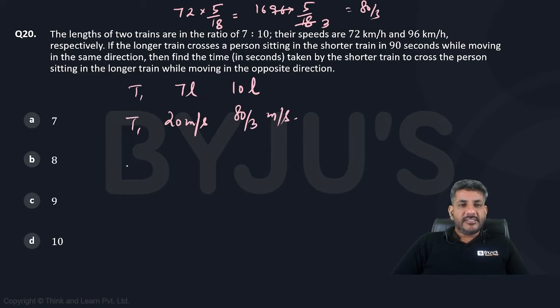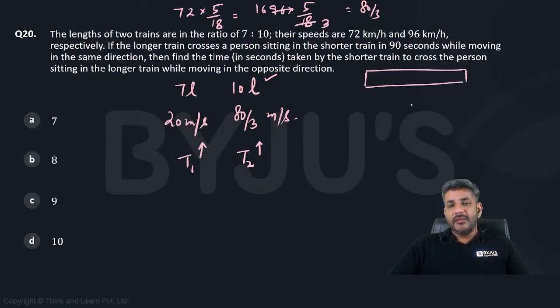So he says now if the longer train, longer train means this train, right? So rather than writing here, I should have written them here. This is train 1, this is train 2. He says the longer train, that means this train, crosses a person sitting in the shorter train. So if this is a train, this is a shorter train, the train crosses a person sitting in this train. Let us say this is the person.